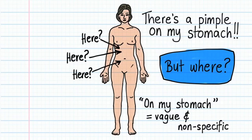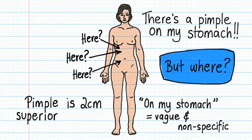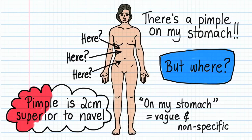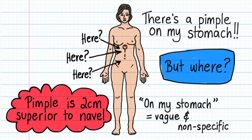But if we use correct anatomical terminology, it's possible to precisely identify the location of her pimple, or any other body feature, so that anyone can precisely locate it. For example, if we're told that her pimple is two centimeters superior to her navel, or belly button, then its location becomes obvious to everybody — which is probably not what this female wants.